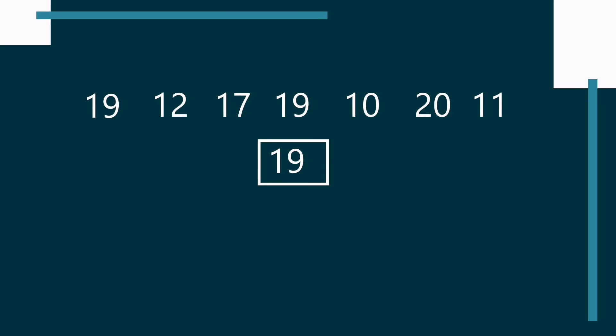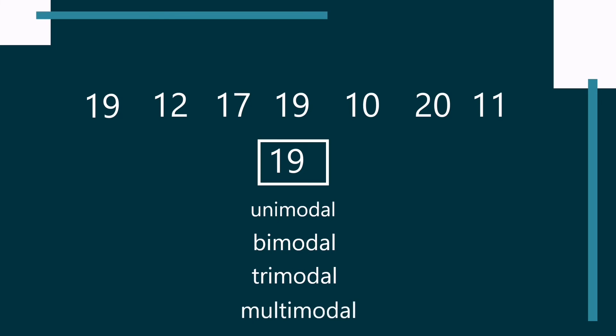A mode can be unimodal, bimodal, trimodal, or multimodal. When a set of data has 1 mode, it is called unimodal. When there are 2 modes, it is called bimodal. When there are 3 modes, trimodal. When there are more than 3 modes, multimodal.